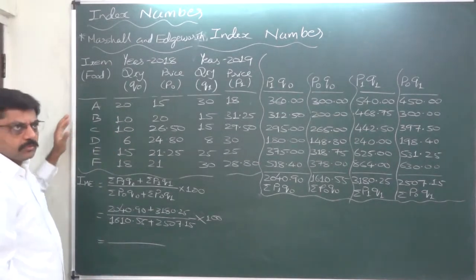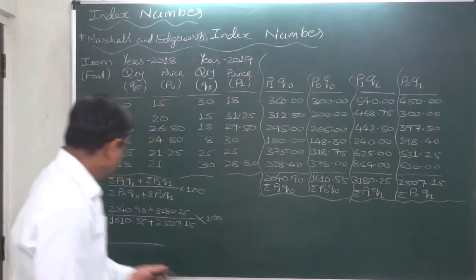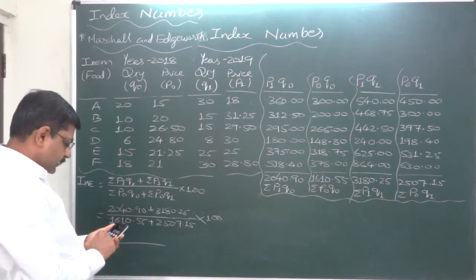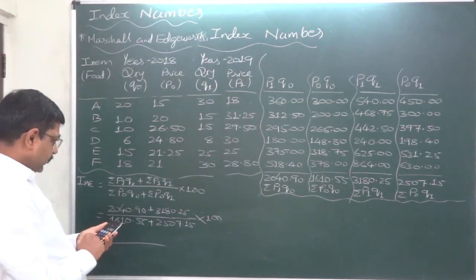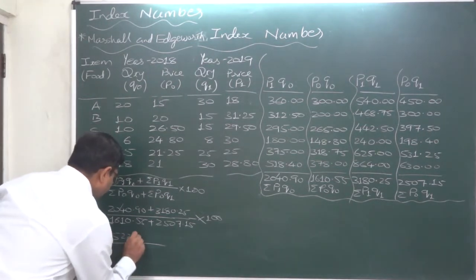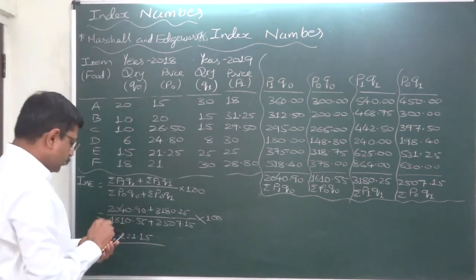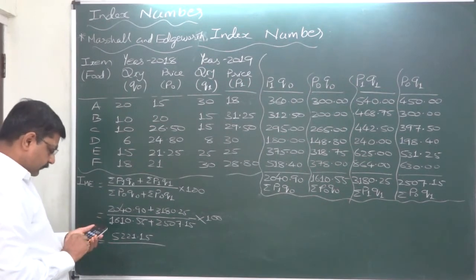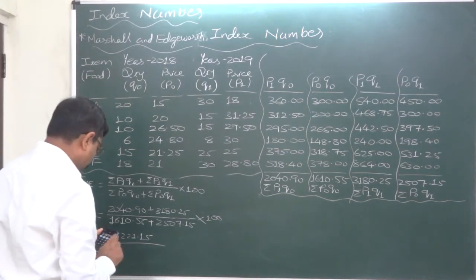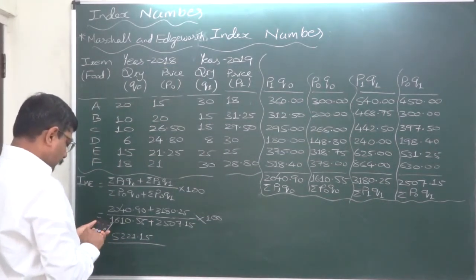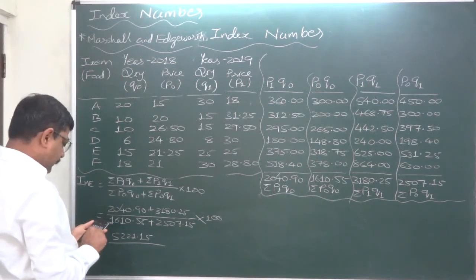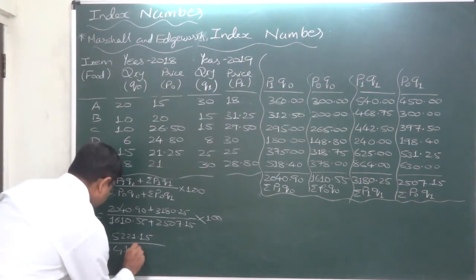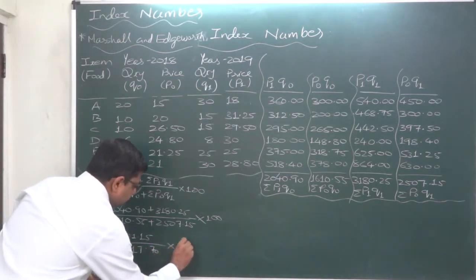The summation of these two comes to 2040.90 plus 3180.25, so it comes to 5221.15. And the summation of denominator comes to 1610.55 plus 2507.15, so it is 1610.55. There was an error in typing 2507.15.